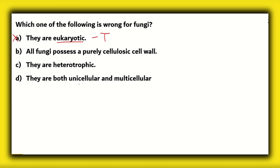So, option A is incorrect. What about option D? They are both unicellular and multicellular. We have unicellular algae such as yeast and we have multicellular algae such as bread molds. So, we have both unicellular fungi and multicellular fungi. So, this statement is also true.